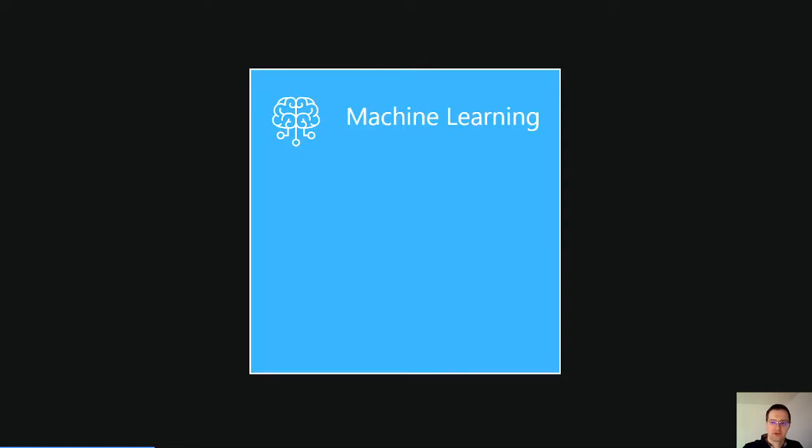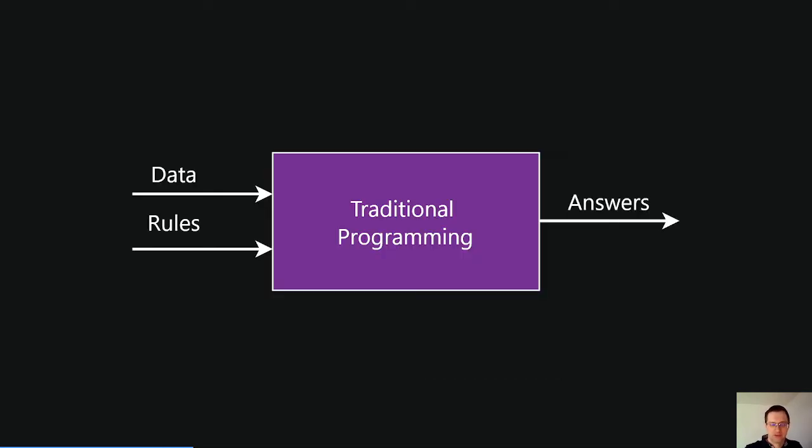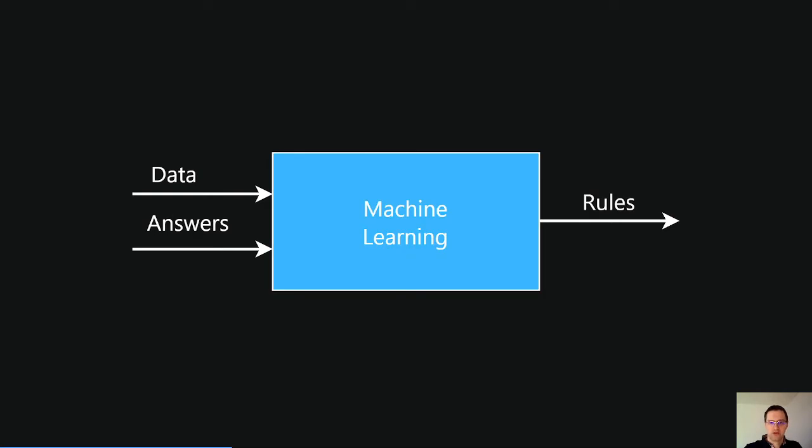But today we will focus just on machine learning. What is machine learning? In traditional programming, we are expressing rules in a programming language and those rules generally act on data and out of that we get answers. Machine learning turns this around. As input we pass the samples and the labels and as a result we get a trained model that maps one to another.